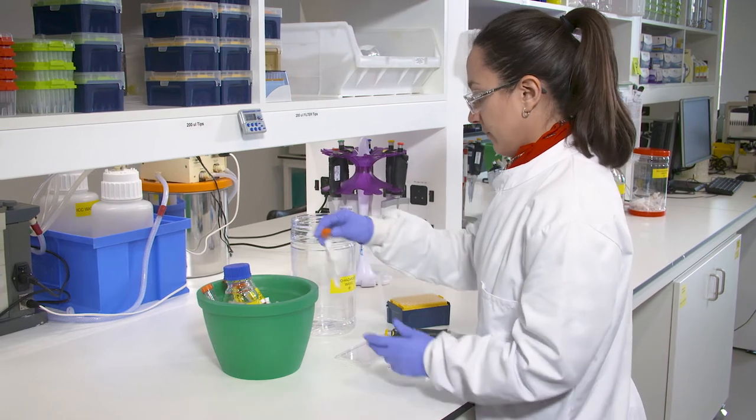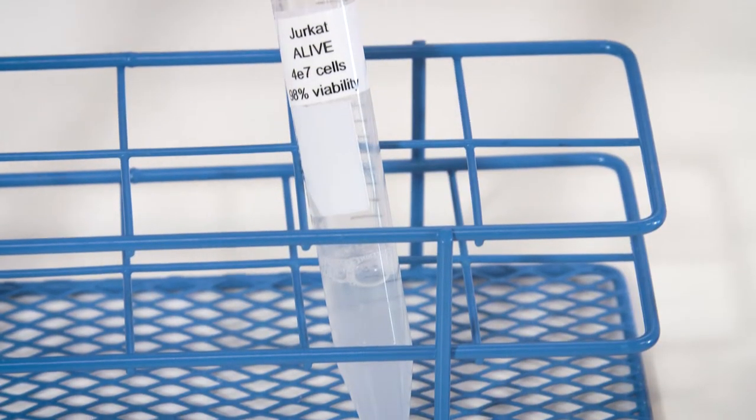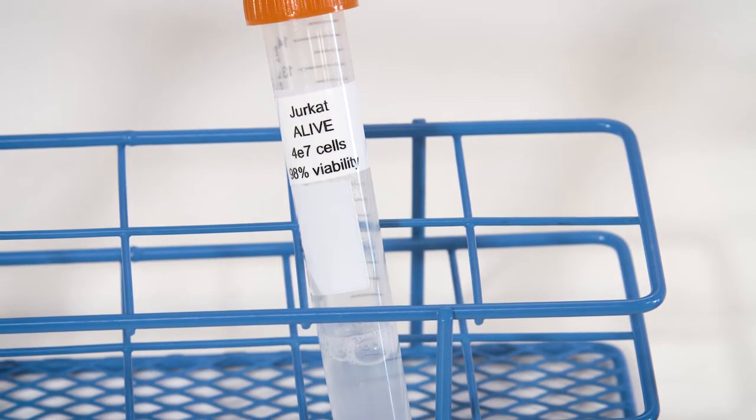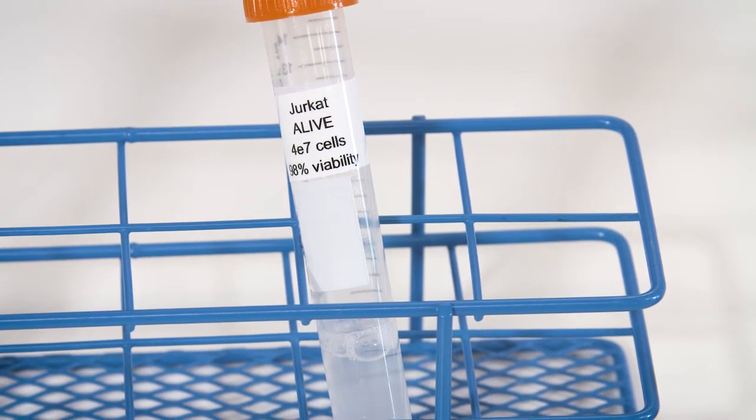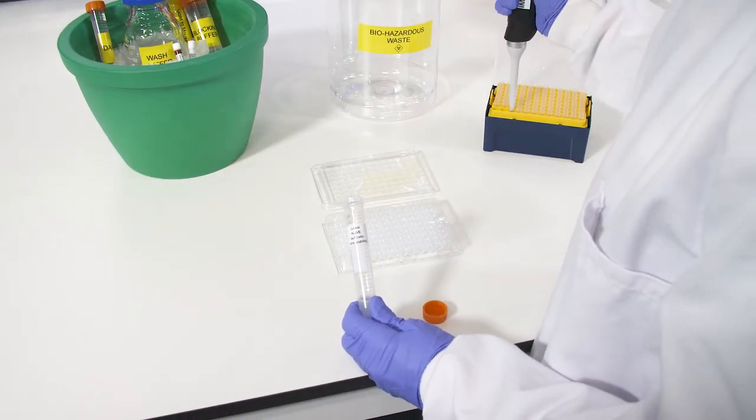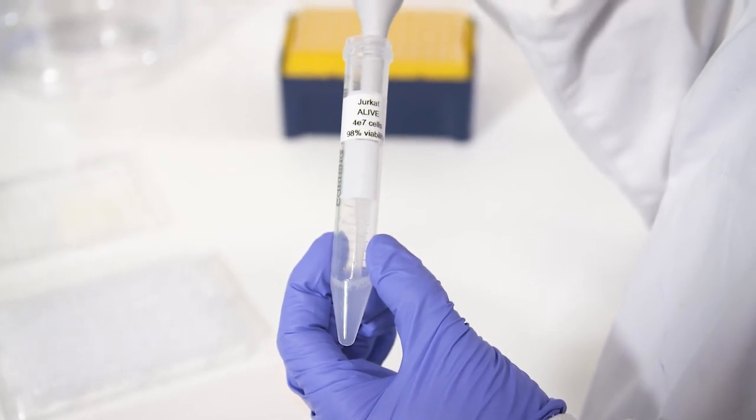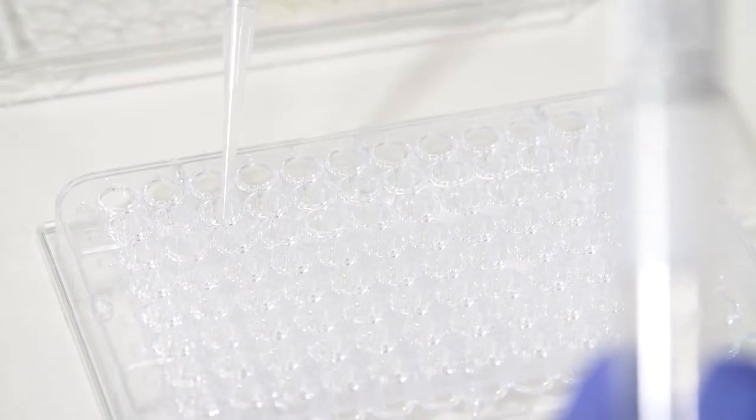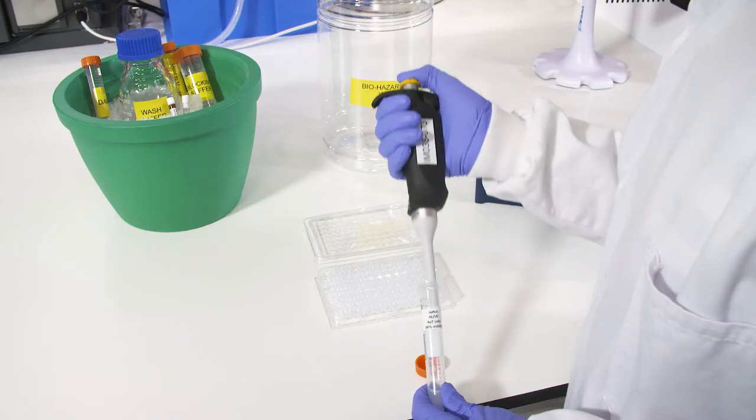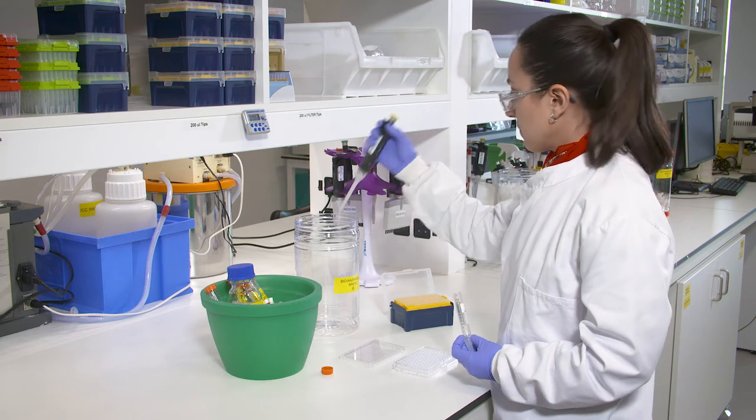After washing your cells, resuspend them at approximately 1 to 10 million cells per ml in ice-cold wash buffer with sodium azide. Add 100 microliters of the cell suspension to a 96 well plate with a U-shaped bottom. Cell viability should be measured using a marker for live and dead cells. Viability should be around 95% and not less than 90%.